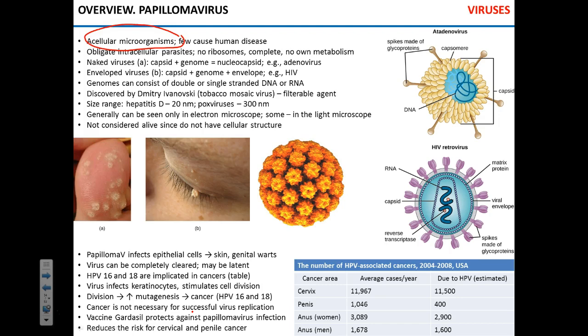What makes viruses non-living, apart from lacking a cellular structure? They lack two essential functional components: they don't have ribosomes, meaning they cannot carry out their own protein synthesis, and they do not have their own metabolic systems, meaning they cannot produce ATP. So they must use cellular ribosomes and cellular energy to replicate, which makes them not only non-living but also obligate intracellular parasites.